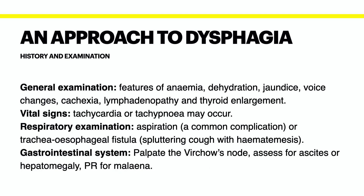When examining your patient, you want to look for features such as anemia, which suggests malignancy or blood loss. Look for features of dehydration due to vomiting. They might have jaundice if there are metastases to the liver. They might also have voice changes or cachexia. It's important also to do a lymph node exam as well as a thyroid exam.